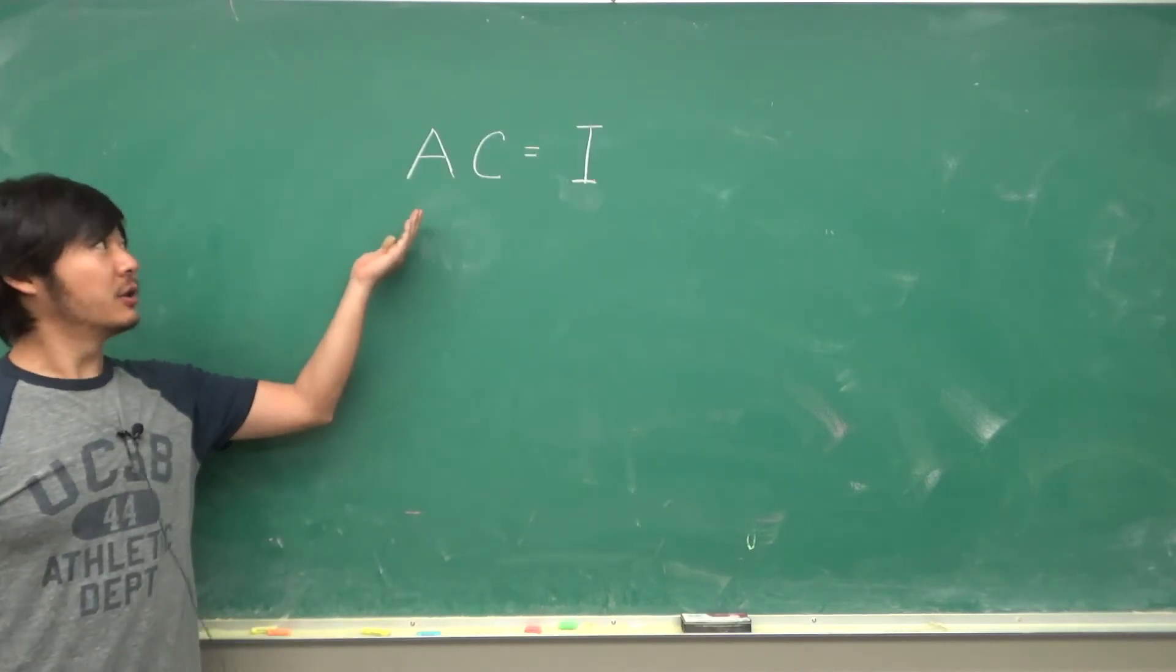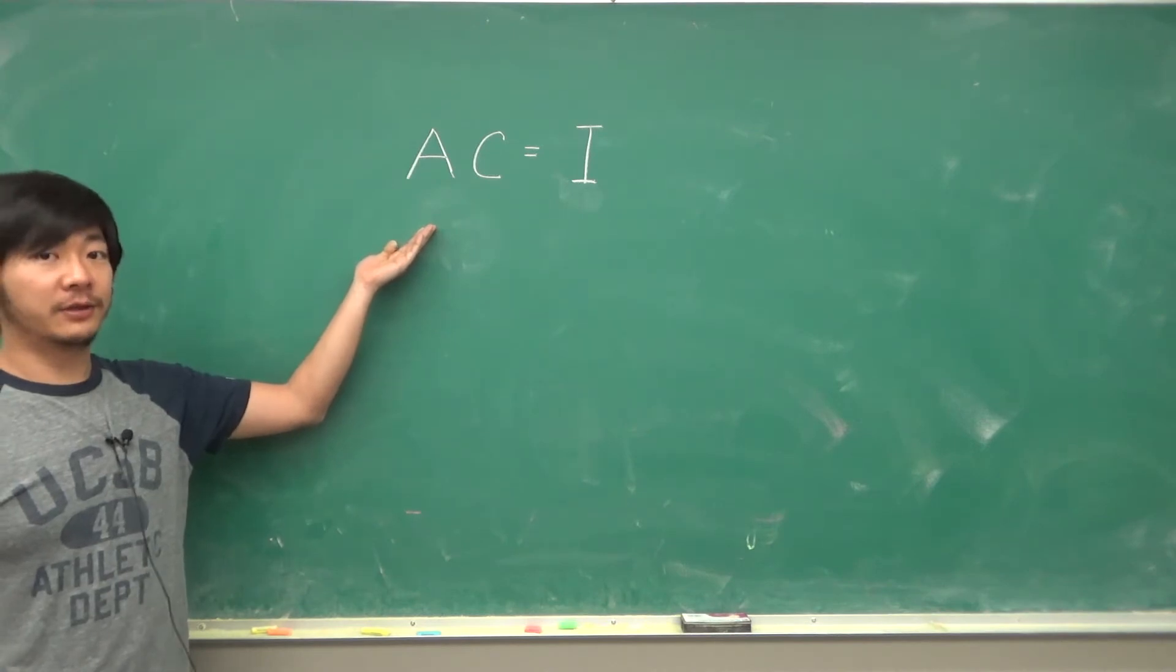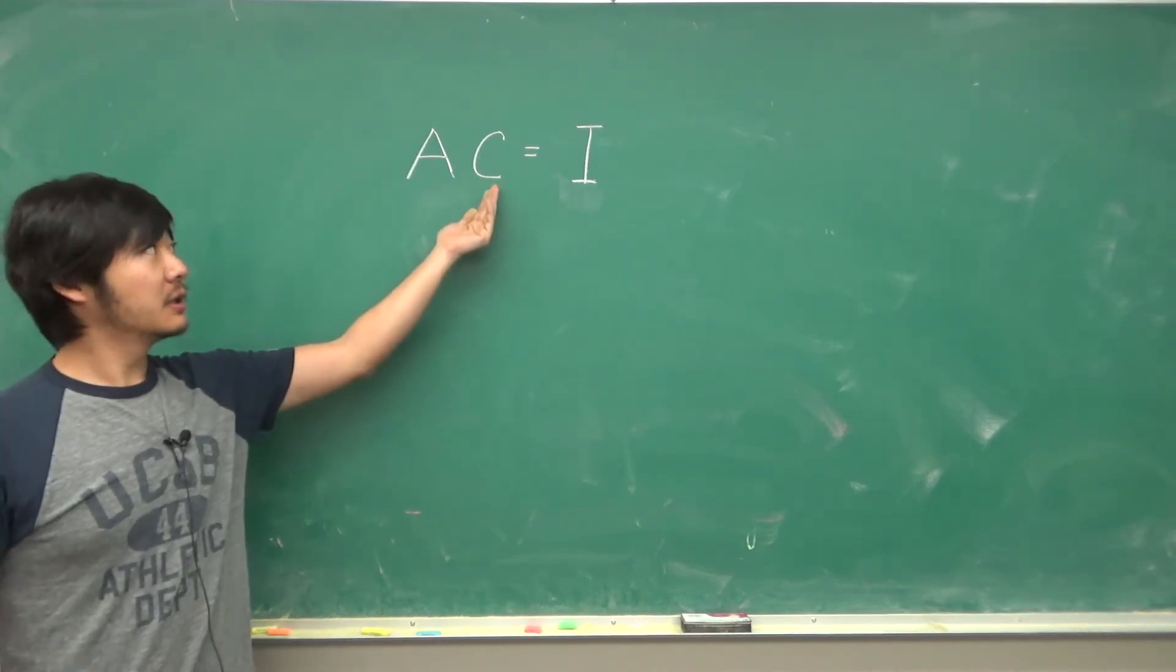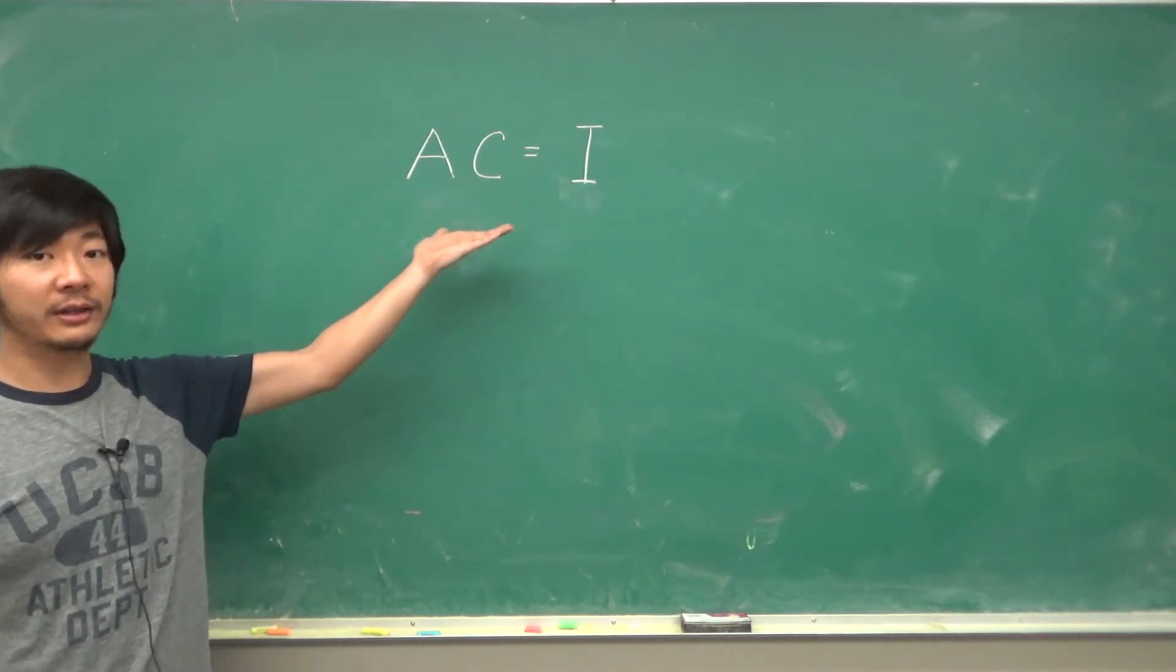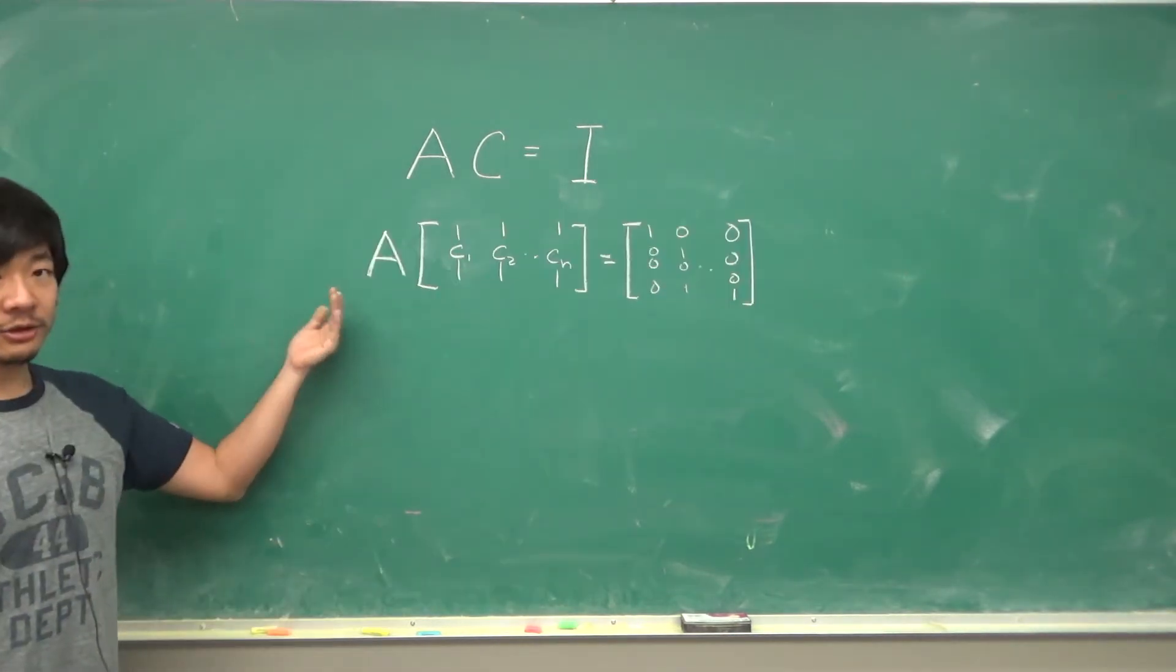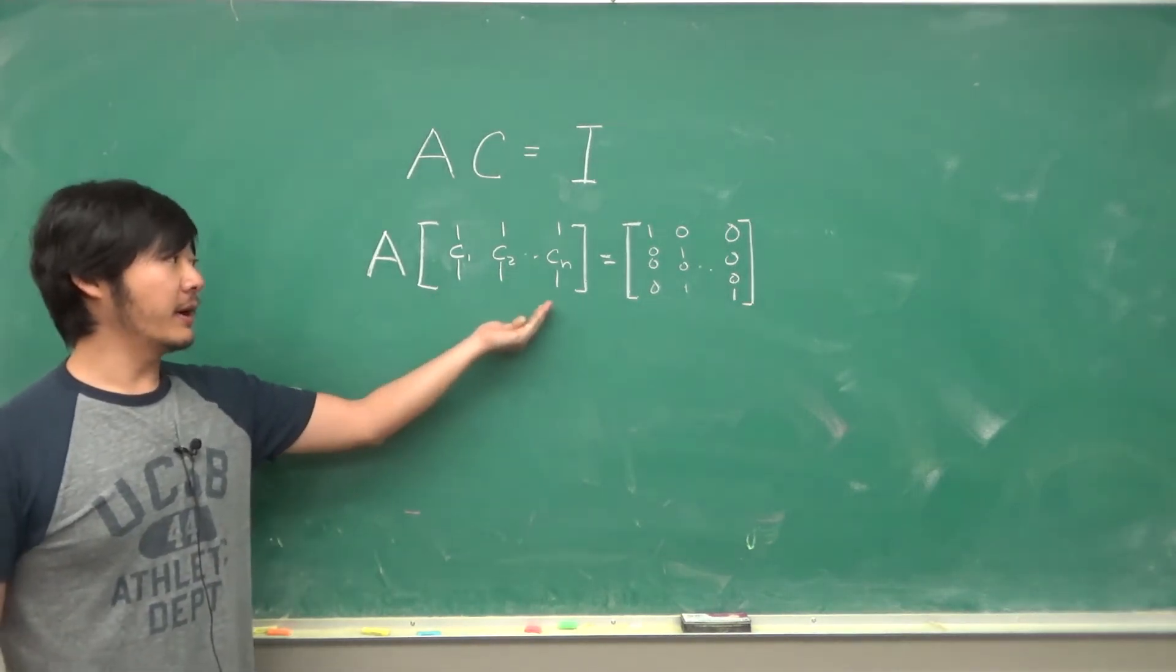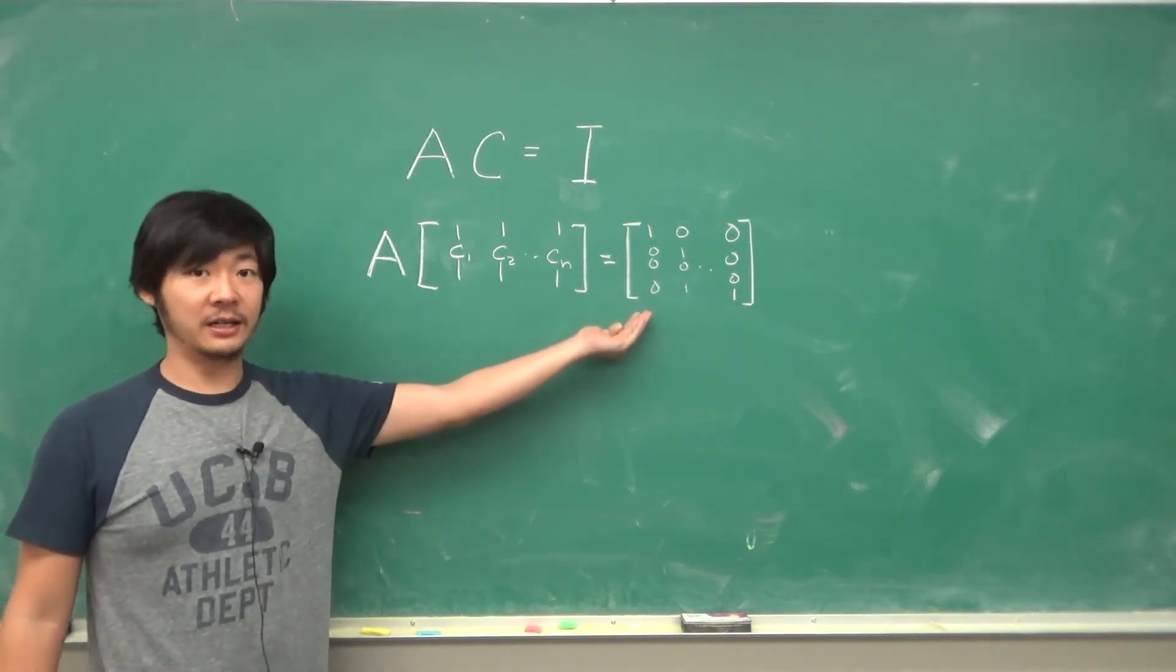So let's think about how we can do such a thing. Well let's go back to the original definition of the inverse of a matrix. It is a matrix such that A times C equals I. So if we write this explicitly out then it's going to be A times C written out by its columns is equal to the identity matrix.